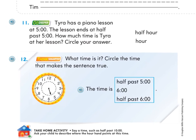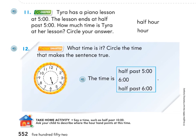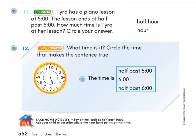Then move on to number eleven. It says Tyra has a piano lesson at five o'clock and the lesson ends at half past five o'clock. How much time is Tyra at her lesson? Circle your answer — it's either half hour or hour.